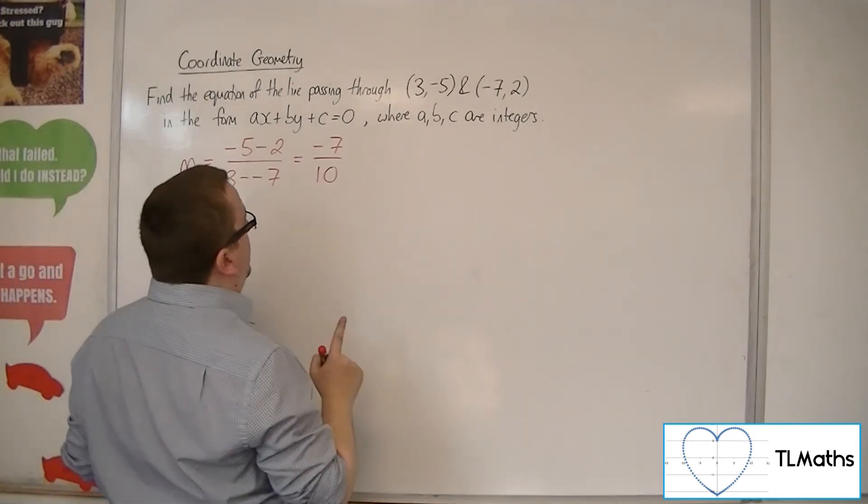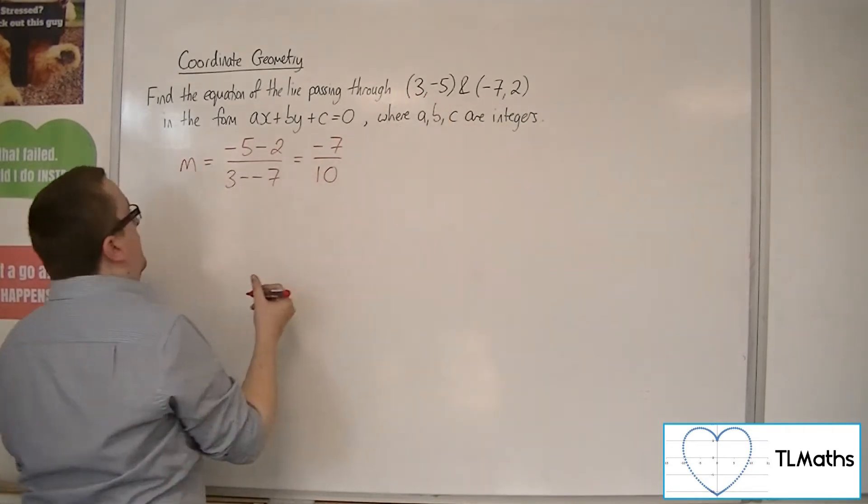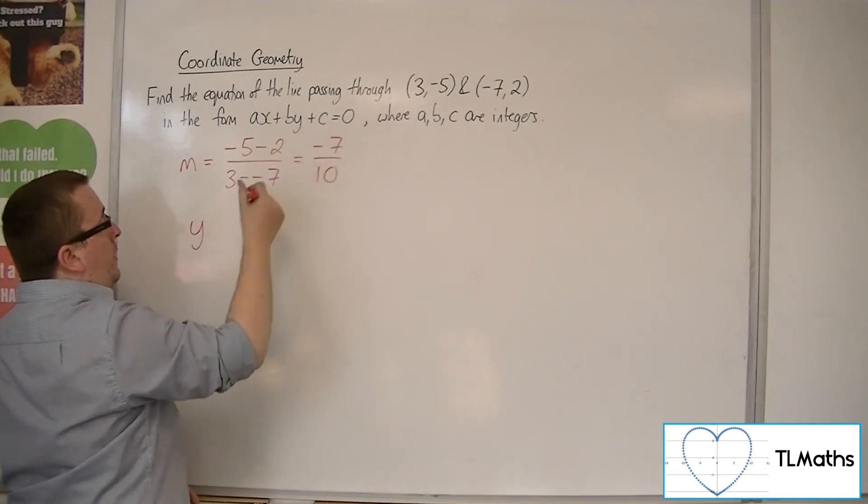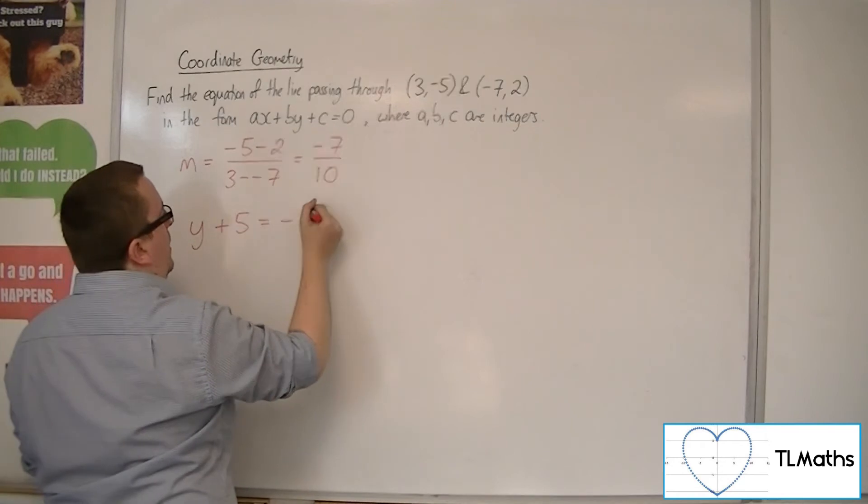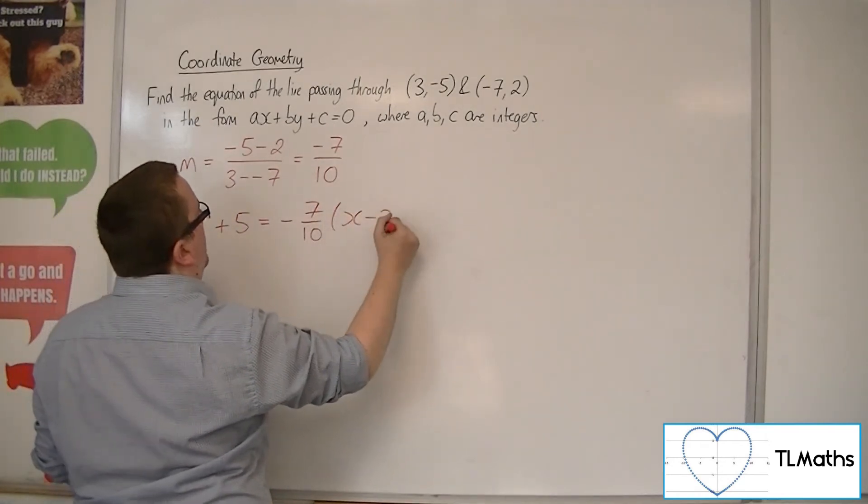So we can then say, using this coordinate as x1, y1, that y minus -5, or take away -5, which is y plus 5, is equal to m, -7/10, times x minus 3.